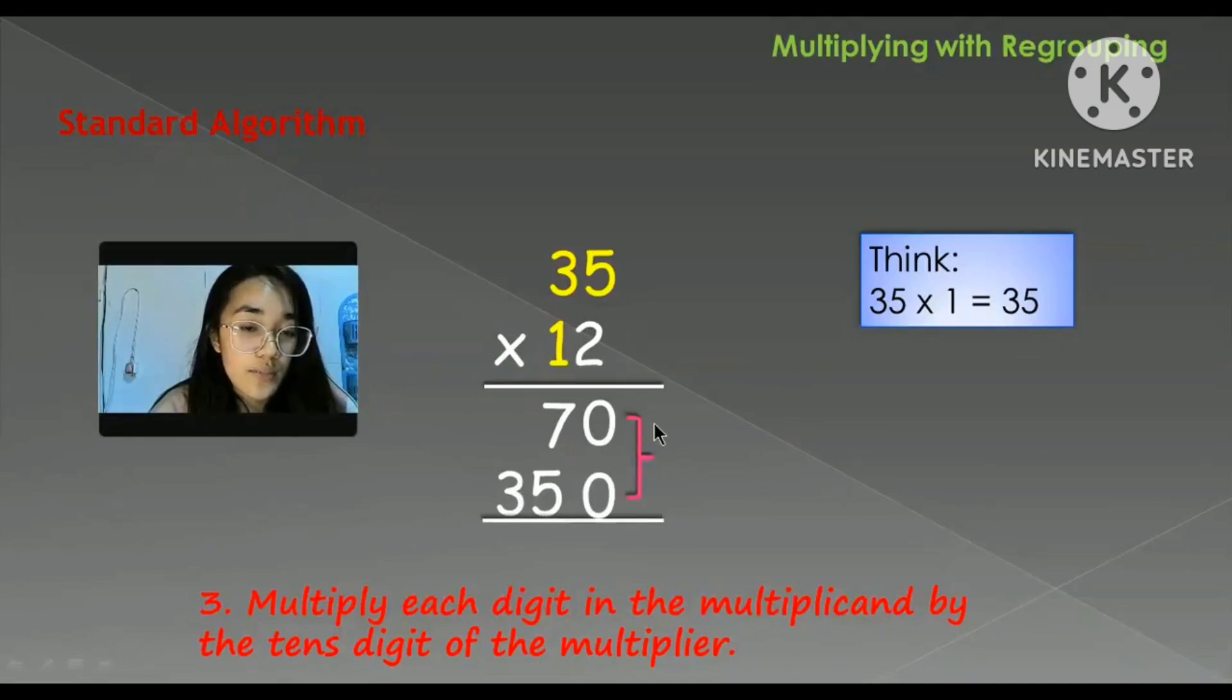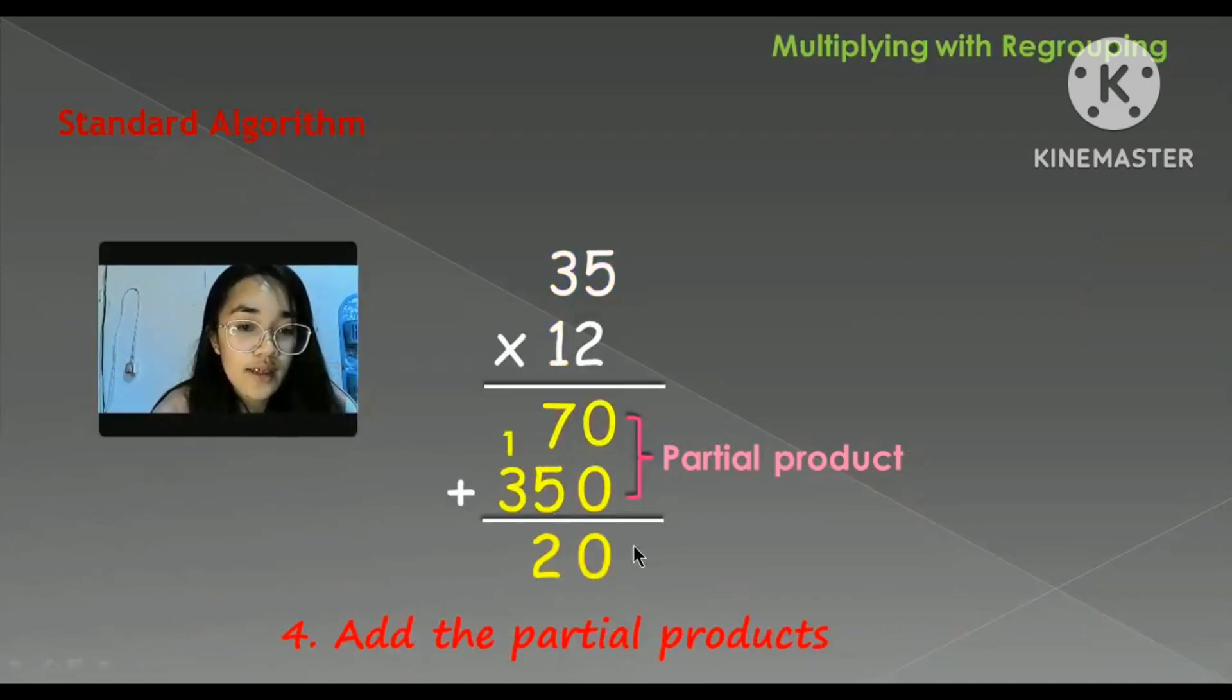So we will add the partial products. So these are the partial products. After adding, we have now the final product. So this is the standard algorithm that we usually use, which is the long method of multiplication.